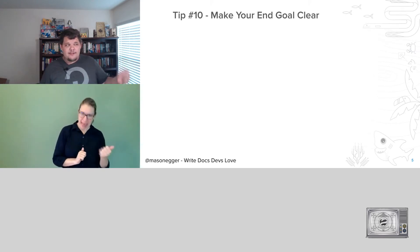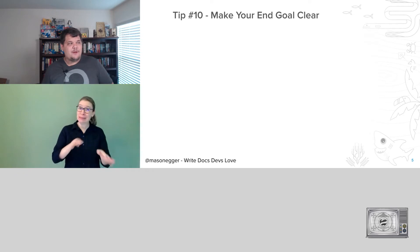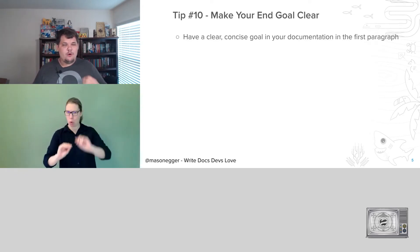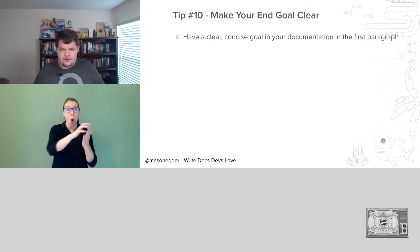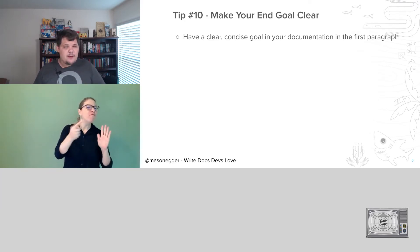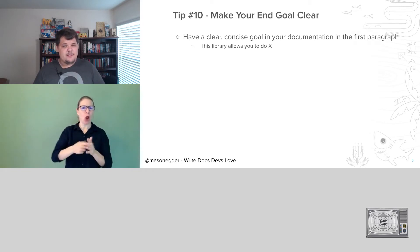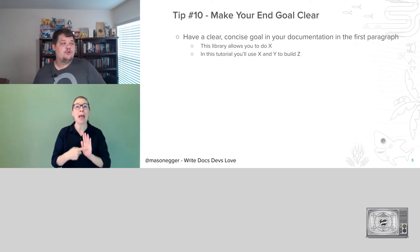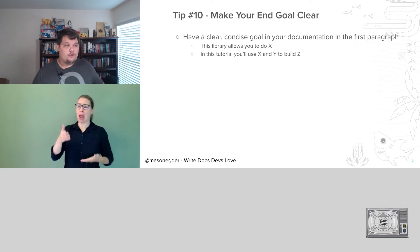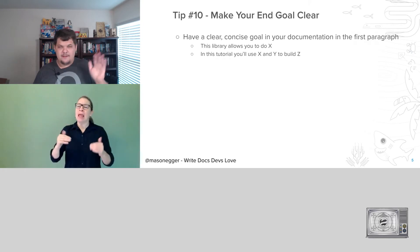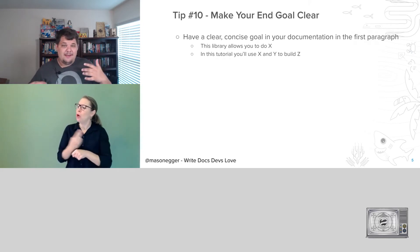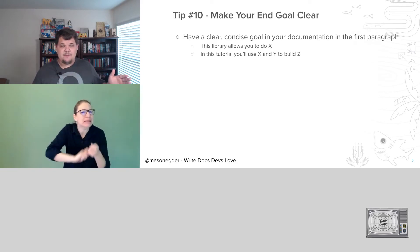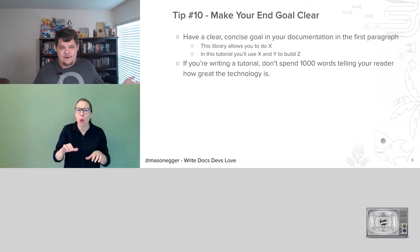Without further ado, let's move on to tip number 10: make your end goal clear. In your tutorial, in your documentation, anything that you're writing, have a clear concise goal in the first paragraph explaining to the user what they're going to accomplish. For example: 'In this tutorial, you will use X and Z to build Y.' Let them know upfront what they're going to do. This sets the expectation, sets the stage, and everything is good with that.